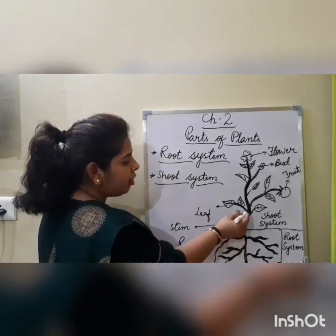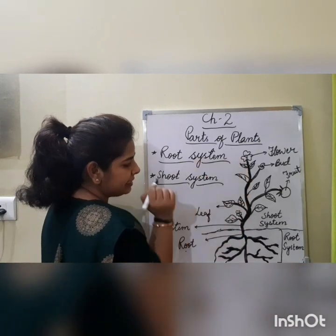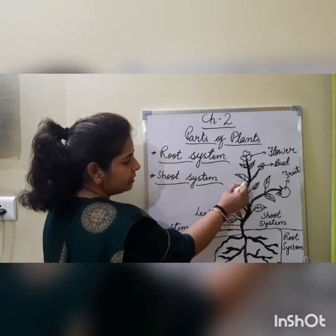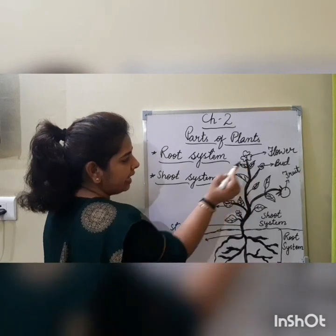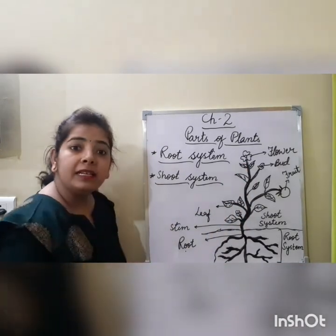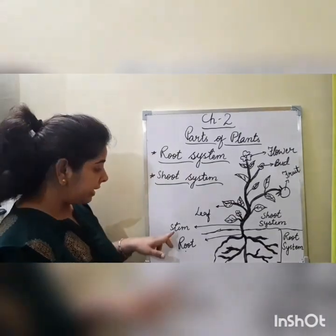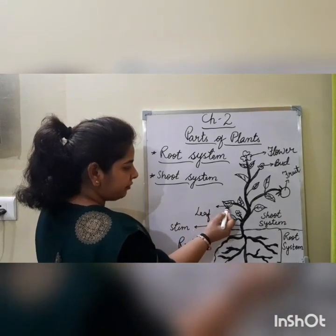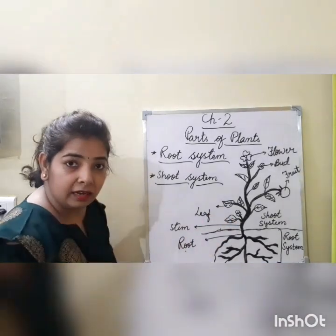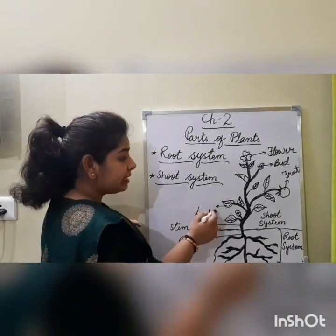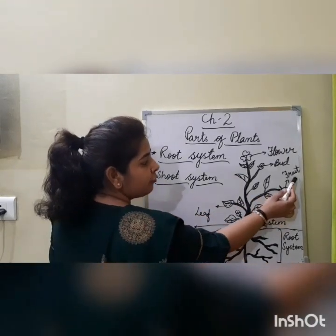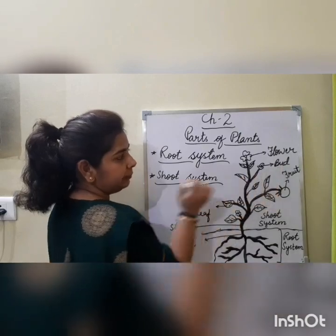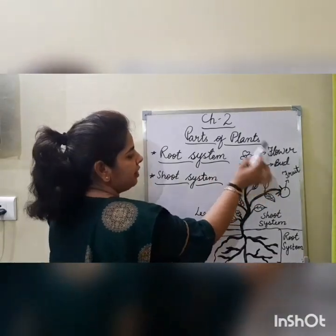Now we are moving to stem. This part is stem of the plant. This is stem. This is leaf — leaf means pattay. This is fruit of the plant. This is bud. This is flower.